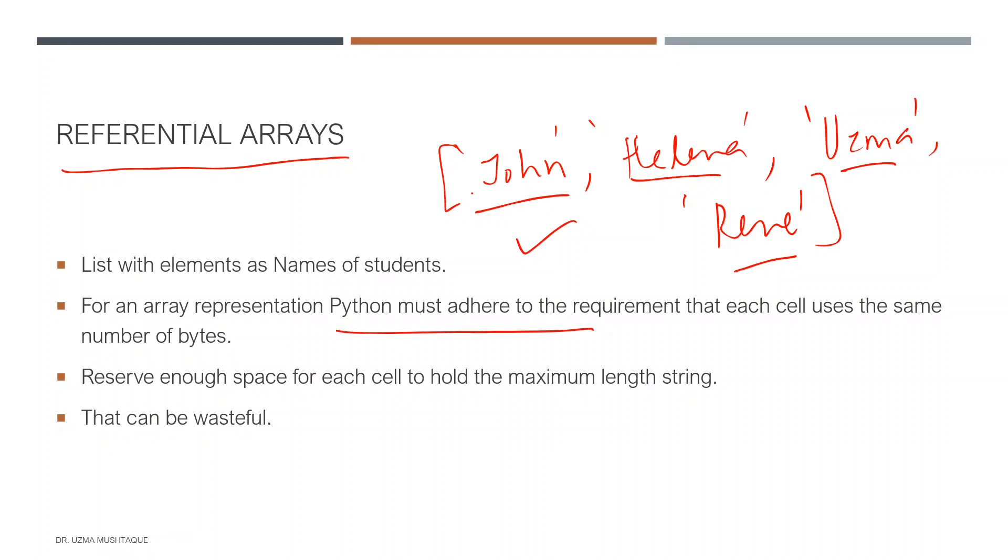One solution would be to check which is the biggest length string—Helena in this case—and reserve enough space for each cell to hold the maximum length string. For example, specify eight bytes for every element in list L. But that could be wasteful because we can have smaller strings.